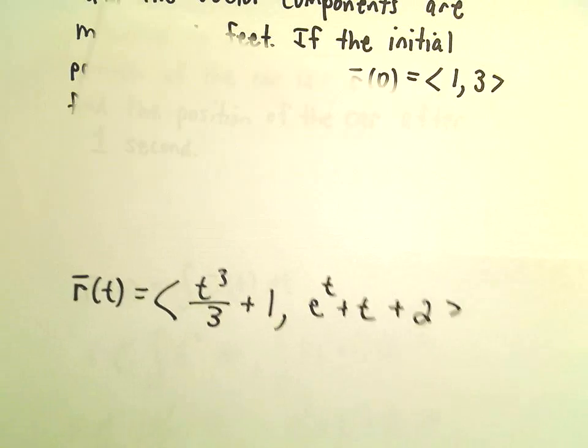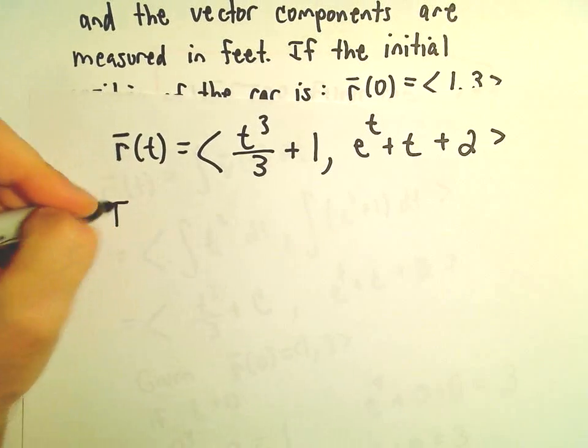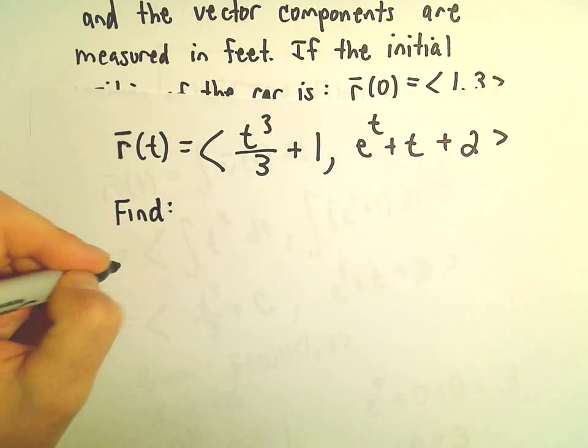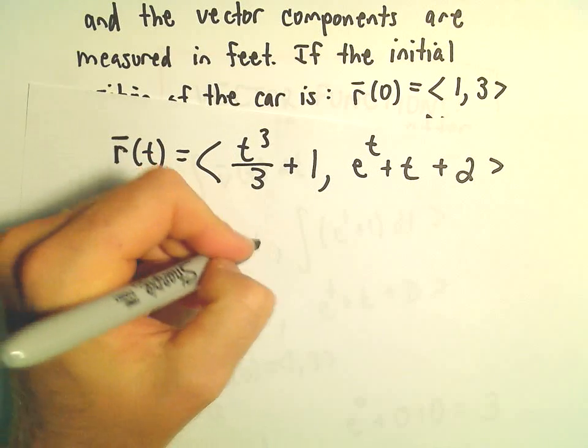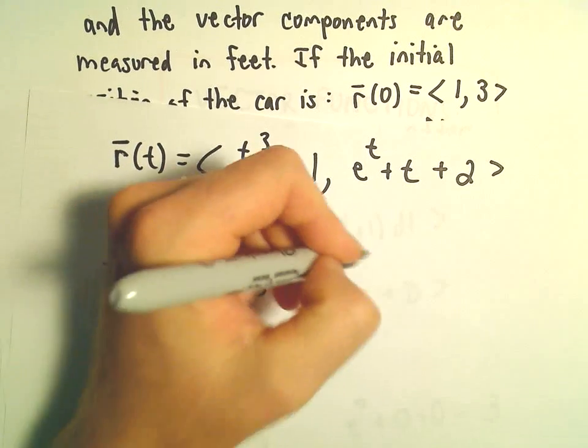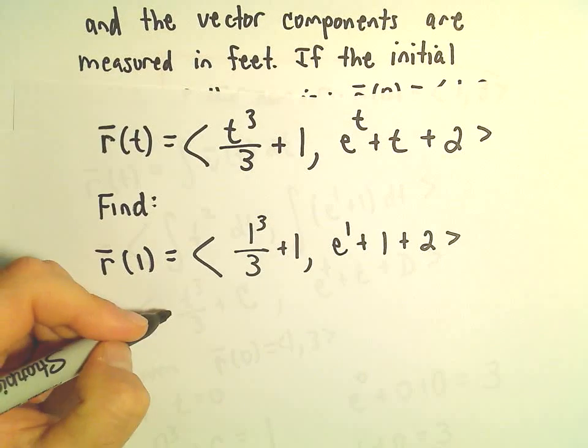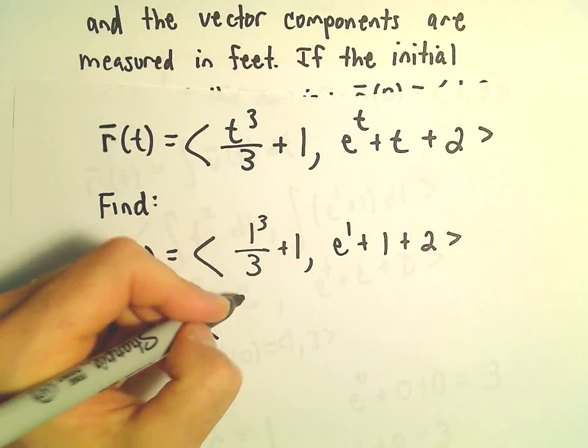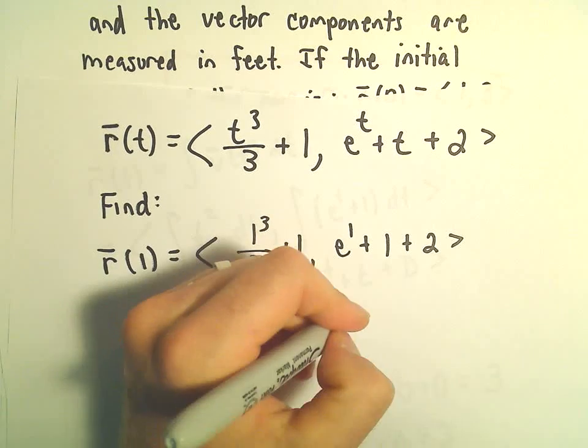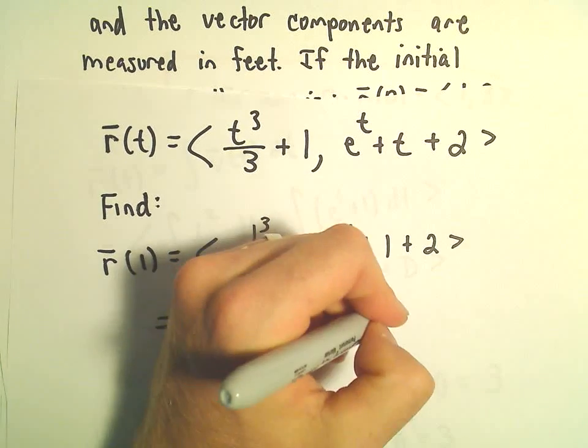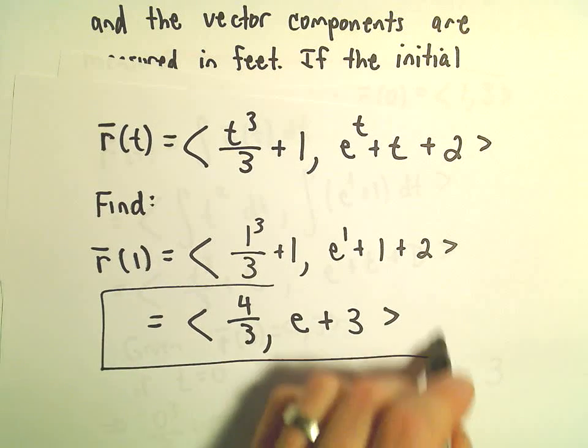So we wanted to find the position of the car after one second, which means we want to find r(1). All we have to do is plug that in: we'll get <1³/3 + 1, e¹ + 1 + 2>. Well, 1/3 + 1 is 4/3, and we would have e + 1 + 2, which gives us e + 3. And now we've got the position of the car one second later.